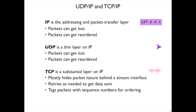We're going to look at UDP for a while, and then build our way up to TCP. TCP is a much more substantial layer on top of IP. In principle, it could almost be built on top of UDP, but both UDP and TCP are built on IP instead. TCP is mostly going to hide this packet nature — the fact that data streams are broken up into packets is mostly hidden from you.